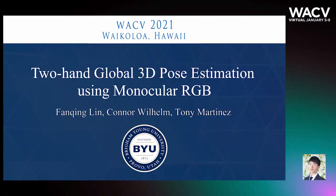This algorithm is the first capable of estimating global 3D joint locations for two hands despite varying occlusion using only monocular RGB images.